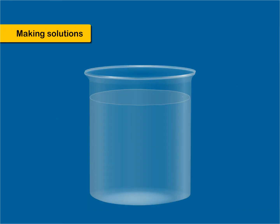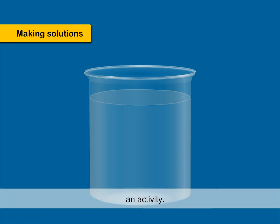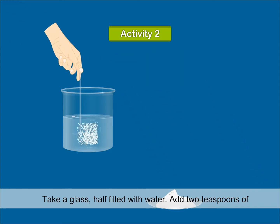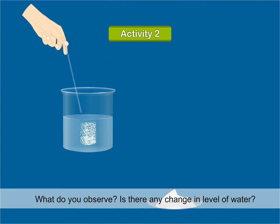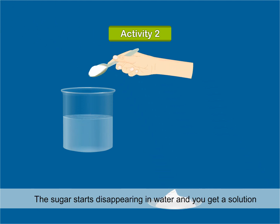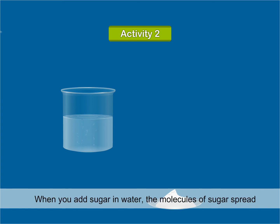Making Solutions: Solids dissolve in liquids. Activity: Take a glass half filled with water. Add two teaspoons of sugar into it. What do you observe? Is there any change in the level of water? The sugar starts disappearing in water and you get a solution of sugar. The taste of this solution is sweet.